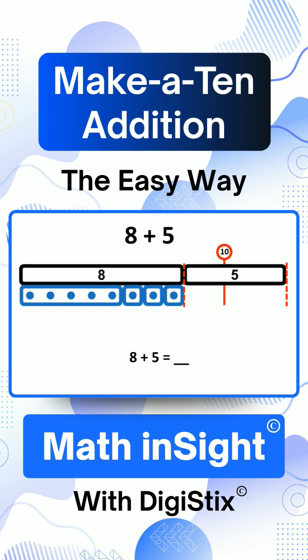The number we add to 8, which is 5, has two parts. The first part is the number we add to 8 to make a 10. It's 2. We call it the 10-pal because 8 and 2 together make a 10.